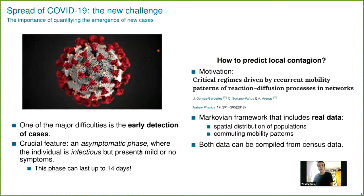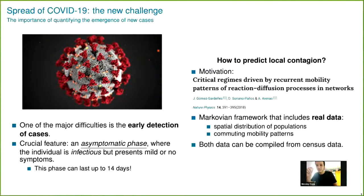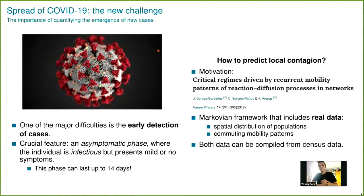The motivation is this paper from Nature Physics on critical regimes driven by recurrent mobility patterns in networks. We use human mobility to see the spread of a disease in a population. The coronavirus, for example, spreads by human mobility — people traveling and interacting with other people spread this virus. We have a crucial feature in COVID: the asymptomatic phase, which we also included in this model.